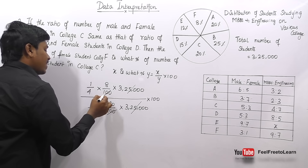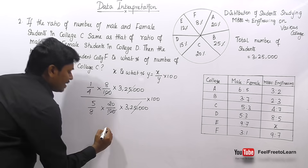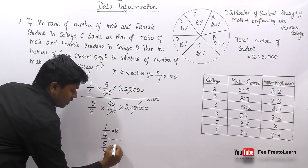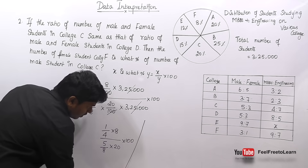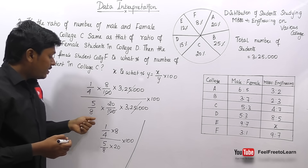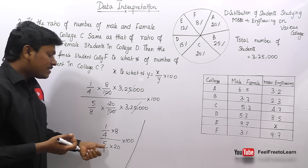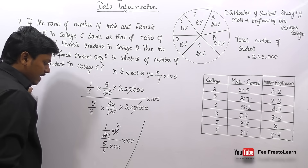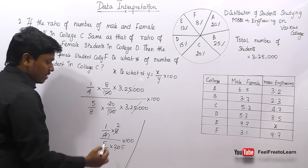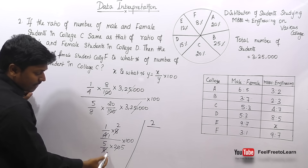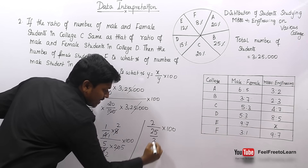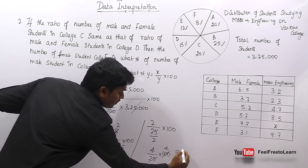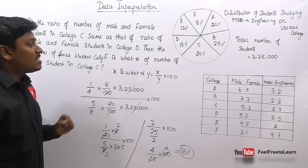Cancel the 3,25,000 and both 100s. Remaining numerator: 1/4 × 8 = 2. Remaining denominator: 5/8 × 20 = 100/8. After further cancellation on the 4-table: numerator becomes 2, denominator becomes 25. So 2/25 × 100 = 8. Cancelling 25 gives 4/25 × 100 = 16. The answer for question 2 is 16%.